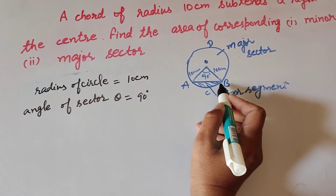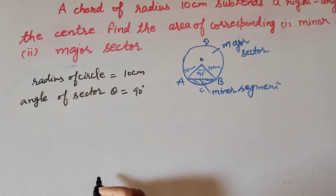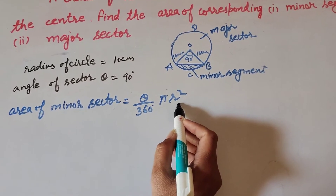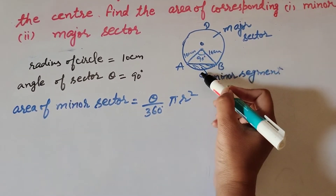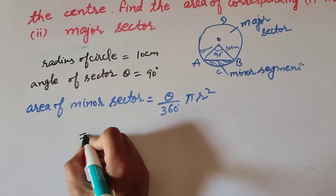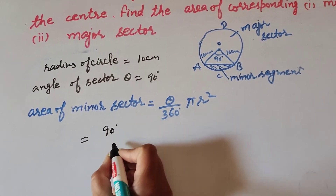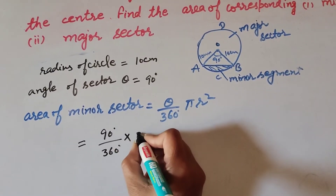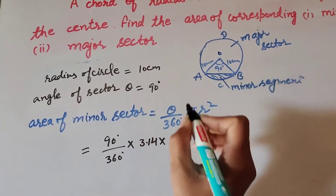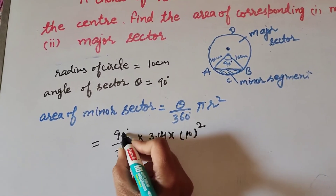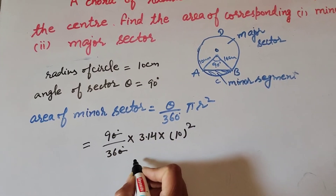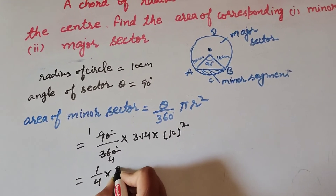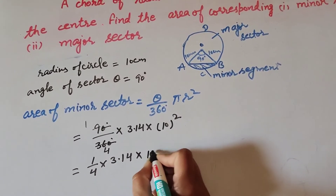First we find the area of minor sector OACB. The formula for area of a sector is: area = theta over 360 degrees multiplied by pi r squared. Here theta equals 90 degrees, pi is 3.14, and r equals 10cm. So it becomes 90 over 360 multiplied by 3.14 multiplied by 10 squared. Simplifying: 9 and 36 cancel to give 1 over 4, multiplied by 3.14 multiplied by 10 multiplied by 10.